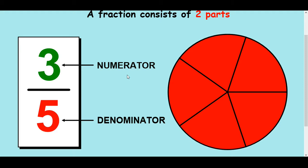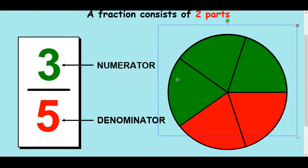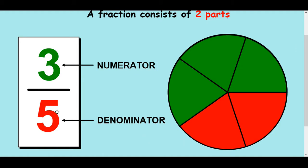Fractions are used to represent numbers in between whole numbers, basically. The bottom of a fraction is called a denominator, the top is a numerator. The bottom of the fraction is basically the number of equal parts you've split something up into. So I've got a circle here split into five equal parts. The top number, the numerator, is how many parts you've got — in this case I've got three green parts out of a total of five, and that's what that fraction represents: three out of five, three-fifths.